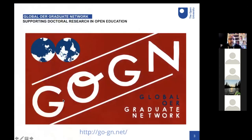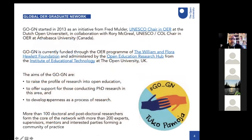Just a bit on GOGN for anyone who's not familiar, or if you're watching this recording later. GOGN is the Global OER Graduate Network — we are a network of support for graduate students and increasingly postgraduate researchers working in the field of open education anywhere in the world. We've been going since about 2013, and the network is currently hosted at the Open University in the UK. GOGN has three main aims: to raise the profile of research into open education, to offer support for people conducting doctoral research in this area, and to develop and explore openness as a process of research. We have about 300 members altogether, which lets us do exciting projects like this conceptual frameworks guide.